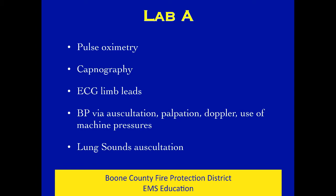ECG limb leads - the four leads can be very helpful in terms of rate and rhythm, and we want to make sure you're placing them correctly. We also want to make sure you can obtain a BP via any of several methods: auscultate when you can hear, palpate when you can't hear, and use a Doppler when you can't even palpate. We want to talk frankly about the use of machine pressures and how to verify those.